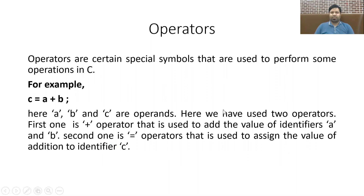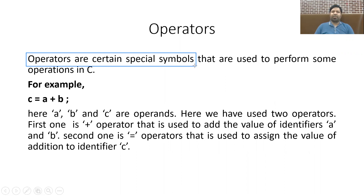Next is operators. Operators are discussed in great detail in the upcoming video lecture on operators and expressions. But you should know what an operator is — operators are special symbols used to perform some operations in C. These symbols have a predefined meaning and you cannot change the meaning or attributes of an operator. For example, in C = A + B, how many operators are there? Two.